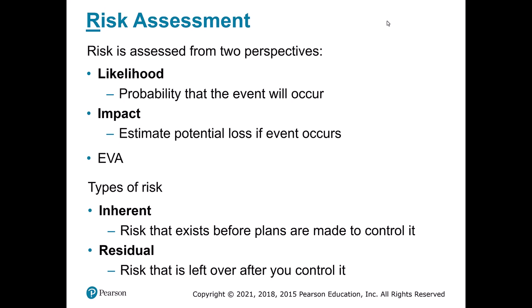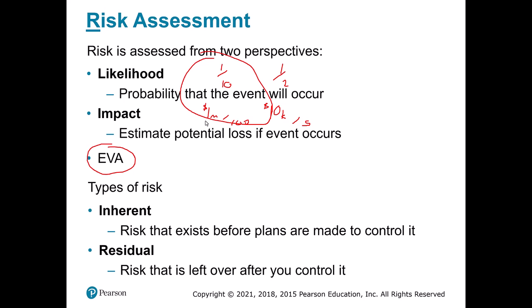For risk assessment, we look at likelihood and impact. Likelihood is the probability an event will occur; impact is the potential loss. We use expected value to connect these. For example, a 1-in-10 chance of a $1 million loss gives an expected value of $100,000, whereas a 1-in-2 chance of a $10,000 loss gives only $5,000. So we'd prioritize the million-dollar scenario even though it's less likely, because the severity is so much higher.